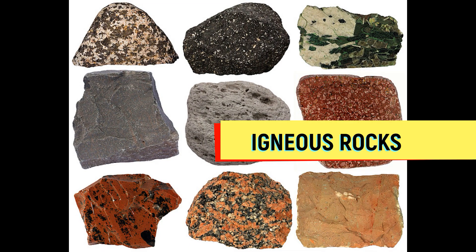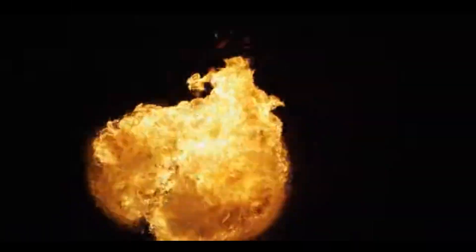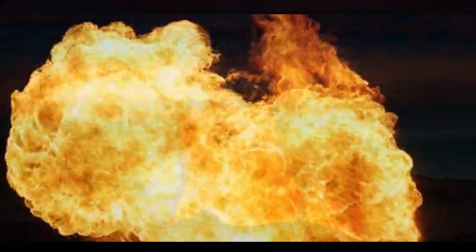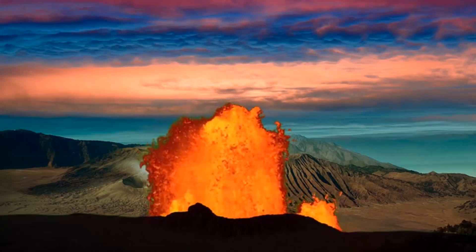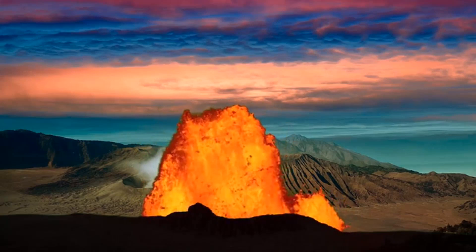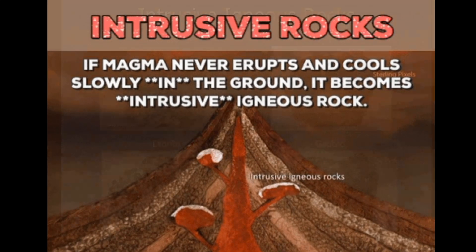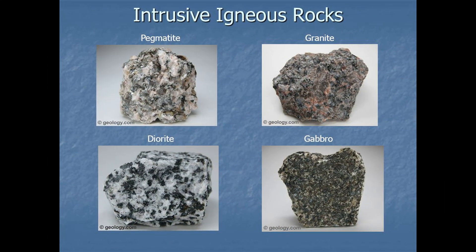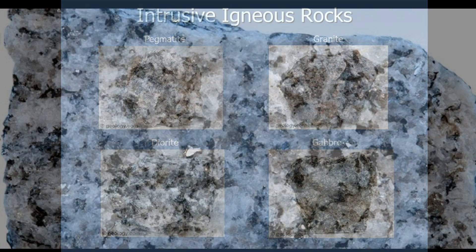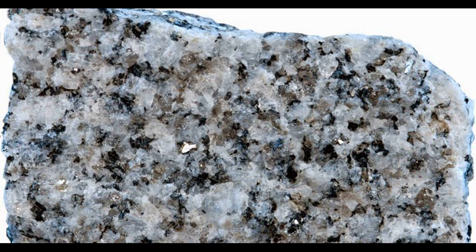Igneous rocks — derived from the Latin word for fire — are formed when molten hot material cools and solidifies. When igneous rocks are formed inside the earth, they are called intrusive or plutonic igneous rocks. Granite and diorite are common intrusive rocks which have a coarse texture with large mineral grains, indicating they spent thousands or millions of years cooling inside the earth, which allowed large mineral crystals to grow.